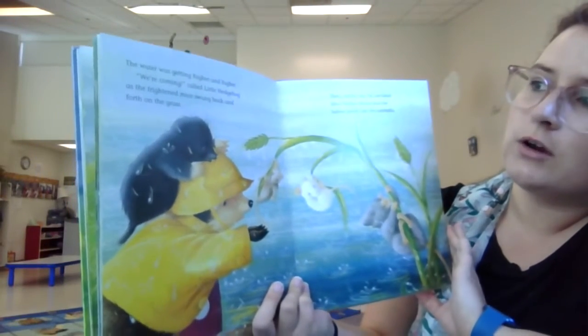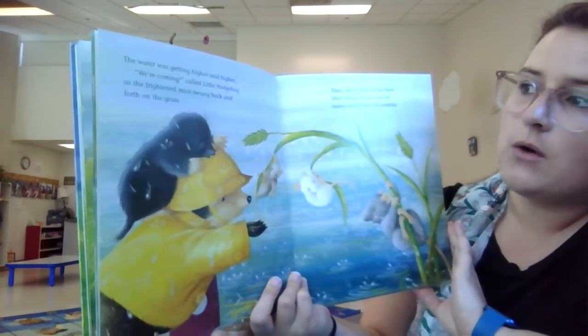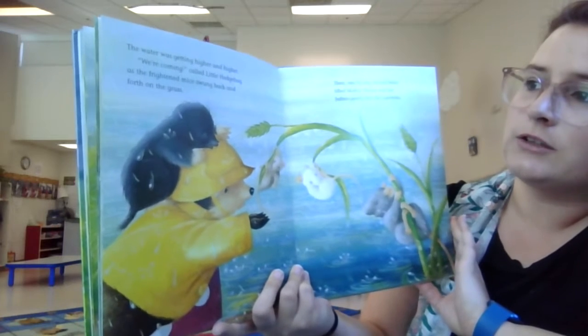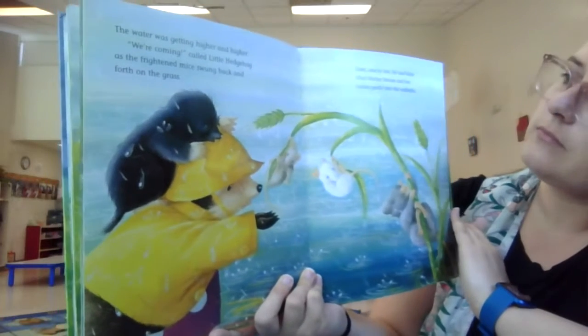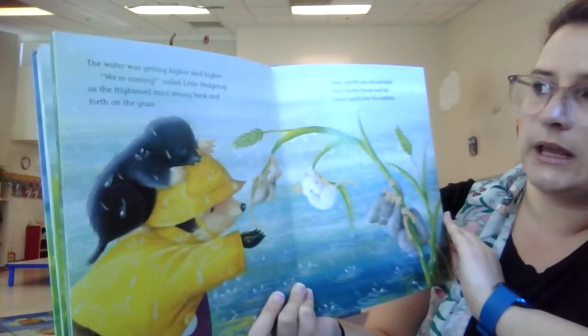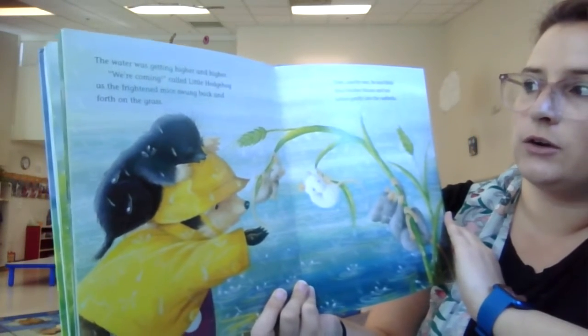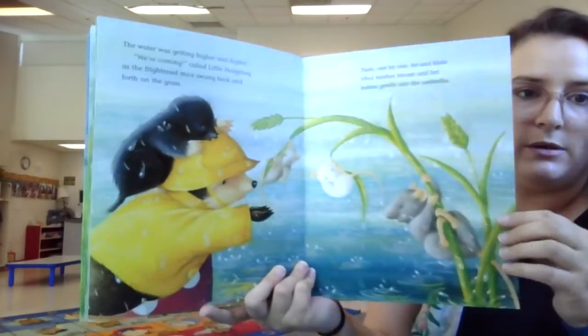The water was getting higher and higher. We're coming, called little hedgehog, as the frightened mice swung back and forth on the grass. Then, one by one, he and Mole lifted Mother Mouse and her babies gently into the umbrella.